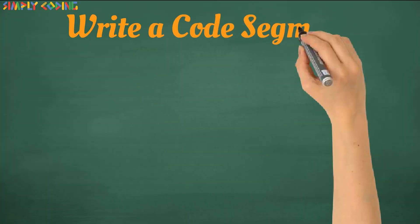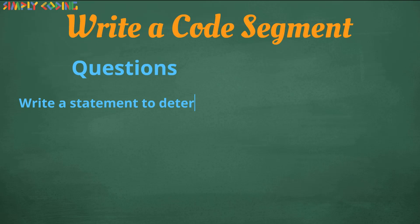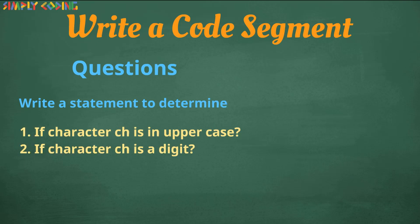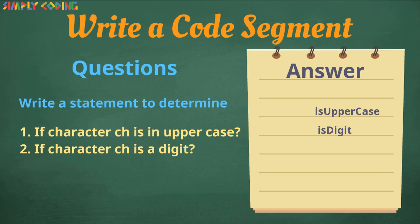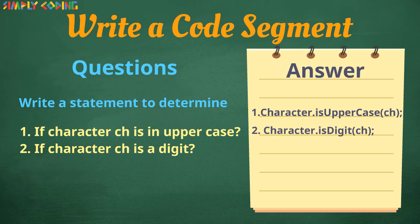Next type of questions are where you might be asked to write a code segment. Like write a statement to determine if character is uppercase or lowercase or digit etc. Here I do know you will be able to identify the method to be used correctly. However some common errors I see student doing is writing ch.method name. This is wrong. Here please remember all character methods are static methods and they take the character as parameter. And you need to write method name along with the class name as shown.